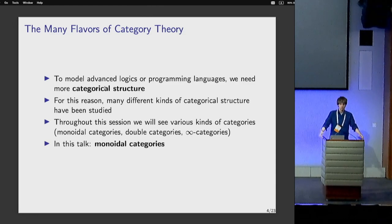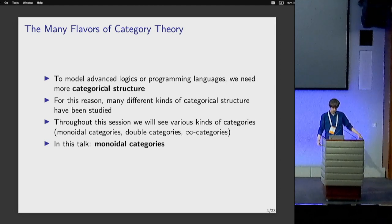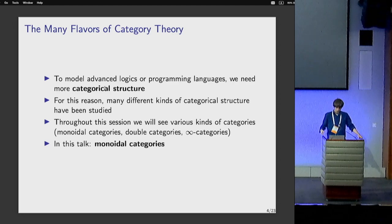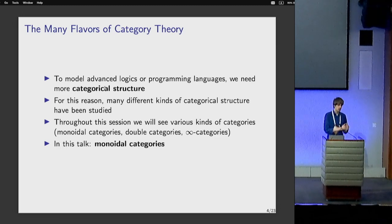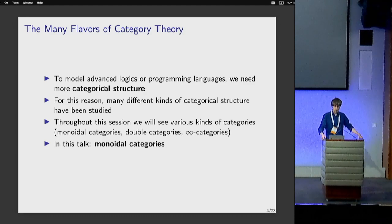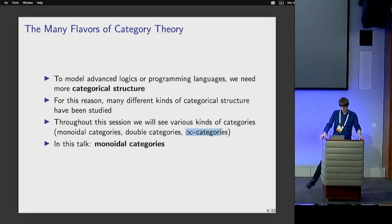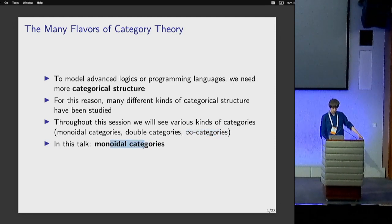When people study this kind of stuff, they want to add features and make it more sophisticated to deal with more complicated examples. That's why people have been studying many different kinds of categories. Throughout this session we'll see three different kinds: in this talk, monoidal categories; in the next talk by Nima, double categories; and in the final talk by Jonathan, infinity categories.